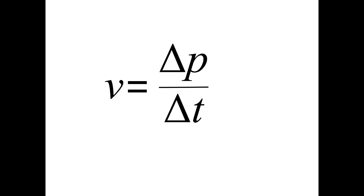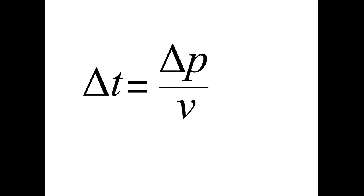Finally, I can rearrange the equation to solve for time: change in time equals displacement divided by velocity. This tells me how long it will take to complete a route, depending on the displacement and the velocity. If I'm looking to minimize time, I can either decrease displacement — which won't work in a fixed 100-meter race — or increase velocity. Increasing velocity decreases the time to complete the task, which is exactly what happened in our example.